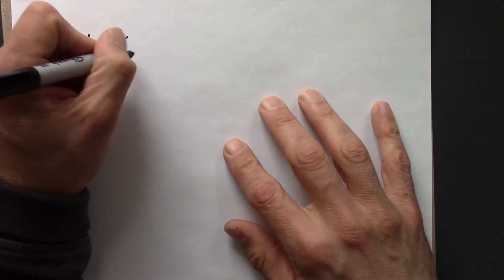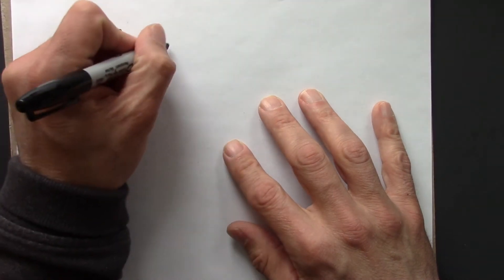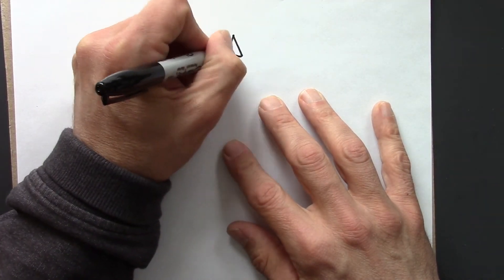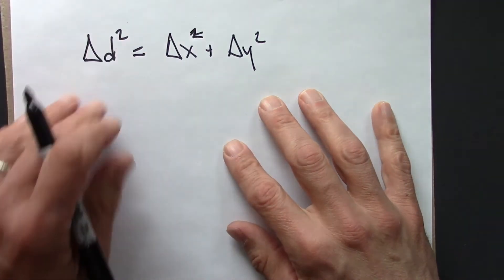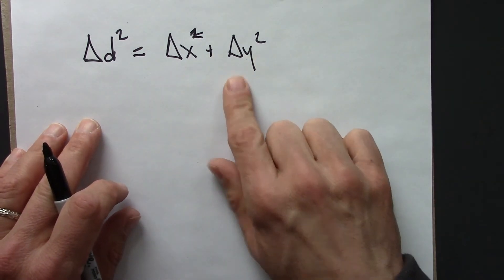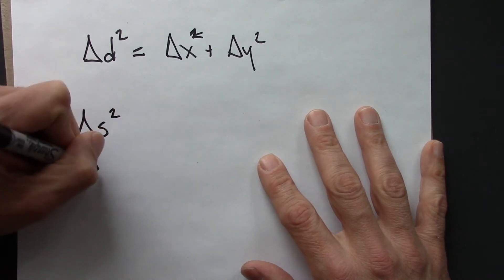So we're going to have the left hand side be a change in distance squared. This is just the Pythagorean formula for distance, in the squared form.